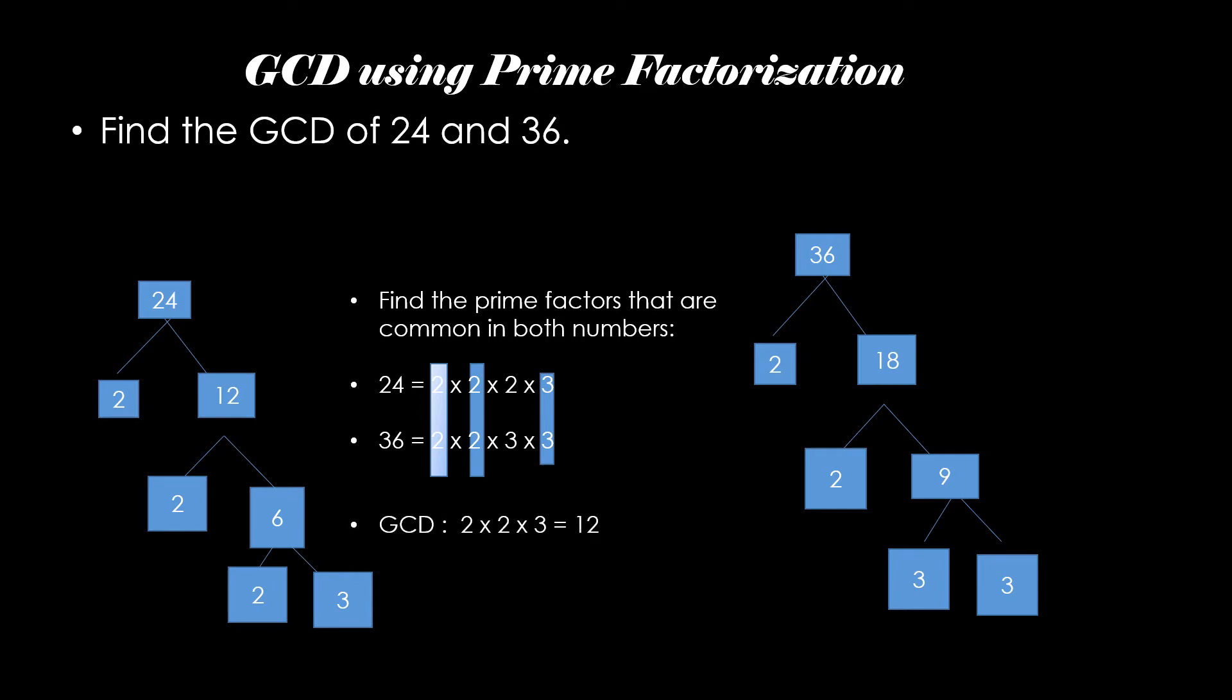And the common factors are 2, 2, and 3. So the GCD, the greatest common divisor will be 12. So this is using the prime factorization using the tree method.